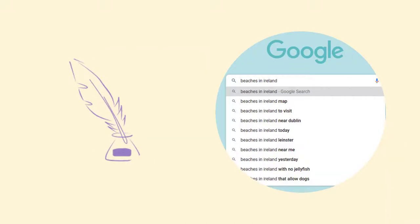A search term is simply what a user or a person types in when they are looking for something. For example, if I type in 'beaches in Ireland', Google is going to bring up the results for beaches in Ireland. So that's what a search term is, and we also call it a keyword.